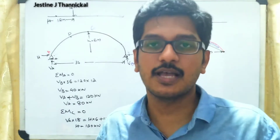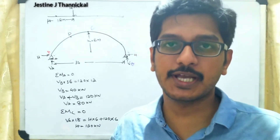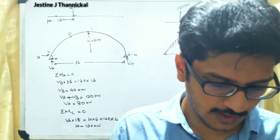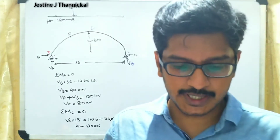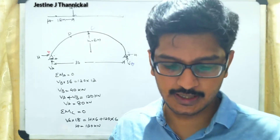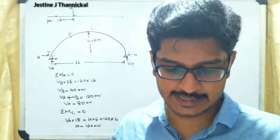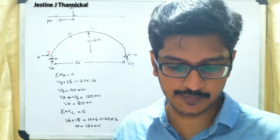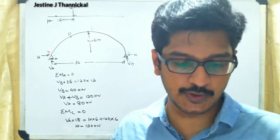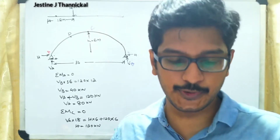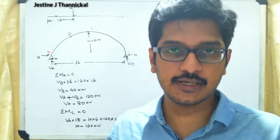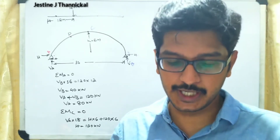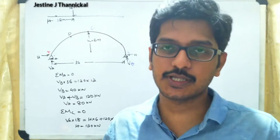We will now discuss a problem related to the bending moment diagram. A symmetric three-hinged parabolic arch of span 36 meters and rise 6 meters is subjected to a concentrated load of 120 kilonewtons at a point 12 meters from the left support. Draw the bending moment diagram for the arch.